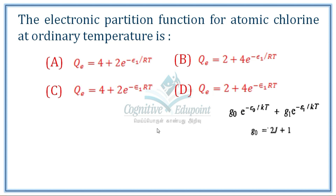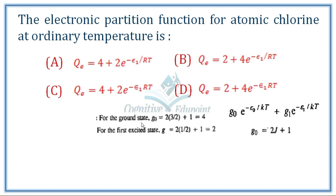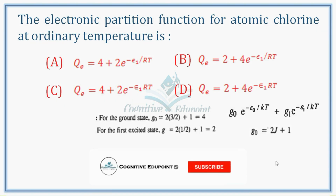If we substitute the values for chlorine at room temperature: for the ground state, the j value is 3/2, so gi = 2 × (3/2) + 1 = 4. For the first excited state, gi = 2. So the electronic partition function becomes 4 plus 2 times e to the power of minus e1 divided by RT. That is the correct answer.